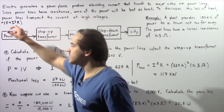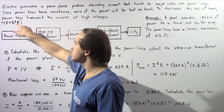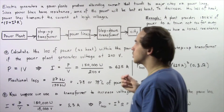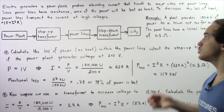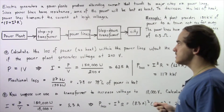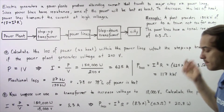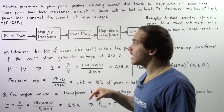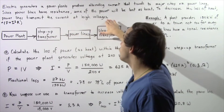Recall that the power loss inside resistors is equal to I squared times R, where R is the resistance and I is our electric current. Since power lines have resistance, some of that power will be lost as heat. To decrease the amount of loss as heat inside the resistance, power lines transmit the current at high voltages.